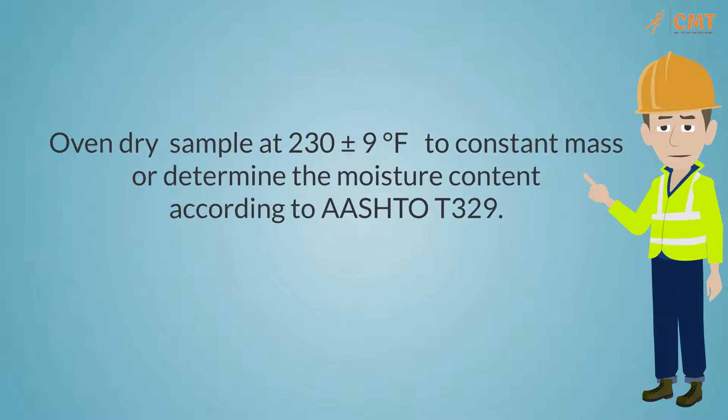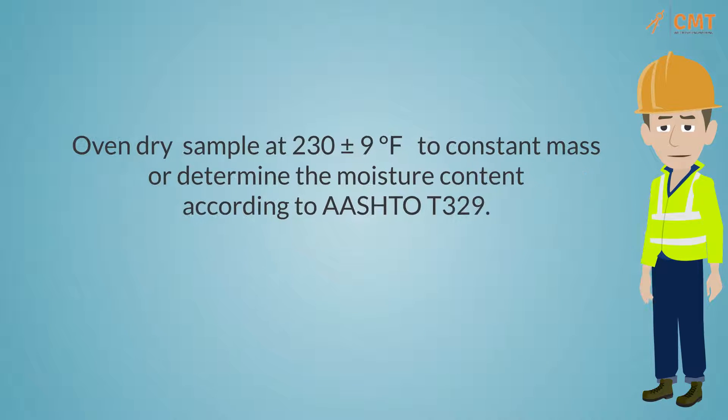Once the oven has reached the chamber set point, obtain a representative portion of the asphalt mixture and reduce it to the required sample size. Oven dry the sample at 230 ± 9°F to constant mass prior to testing, or collect a separate representative sample and determine the moisture content according to AASHTO-T329.